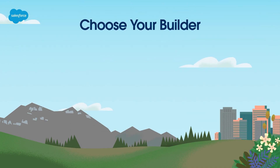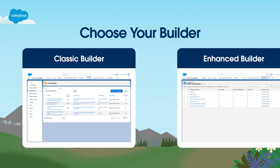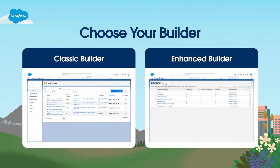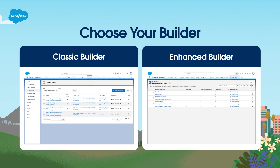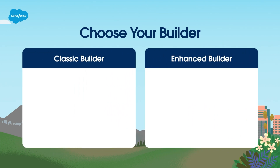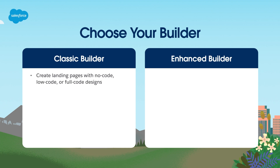It's important to note that because landing pages are hosted in Account Engagement, they won't be part of your website hierarchy. You can choose from two landing page builders in Account Engagement: classic and enhanced. With the classic landing page builder, you can create landing pages with no-code, low-code, or full-code designs.